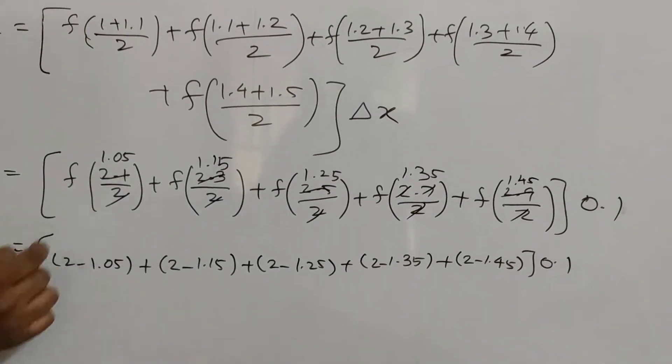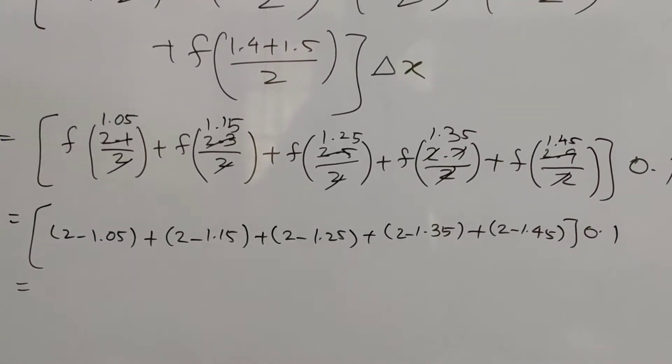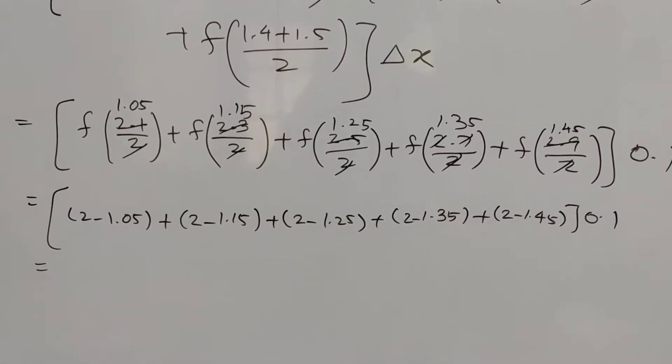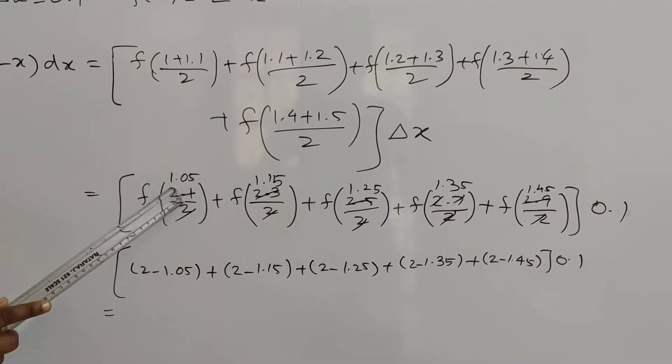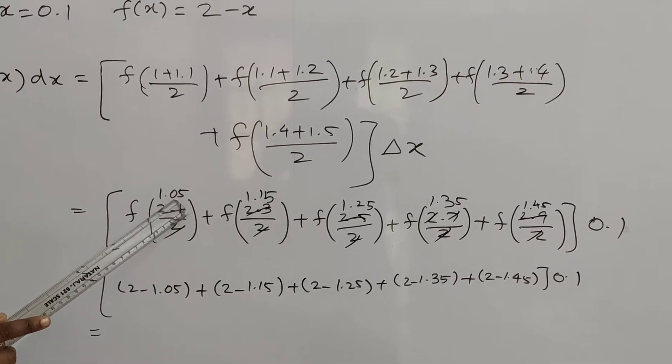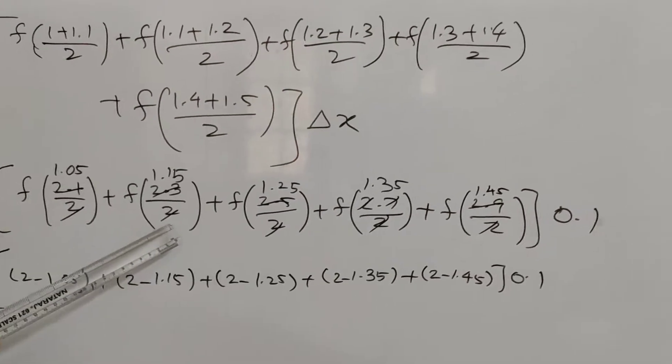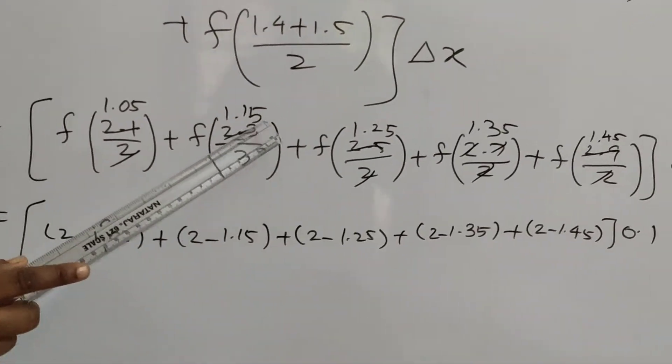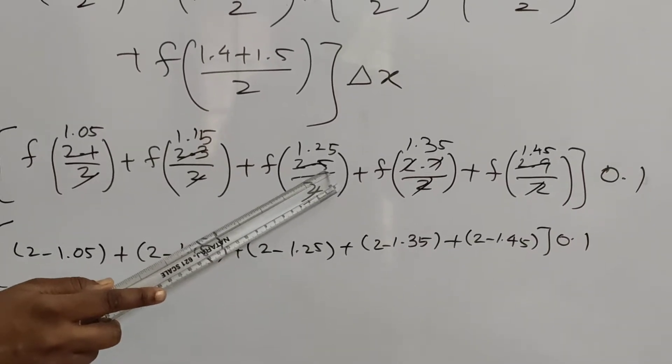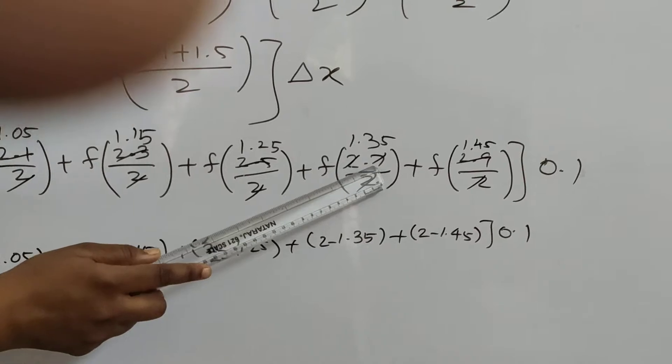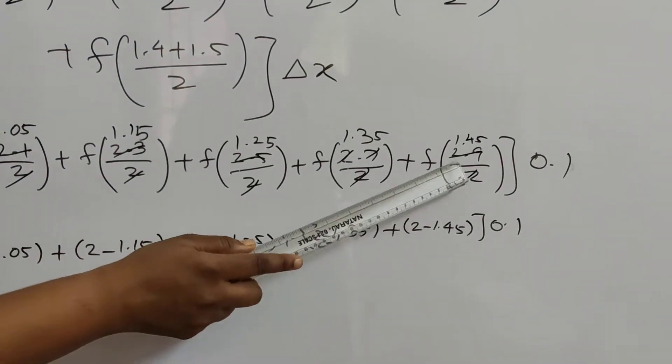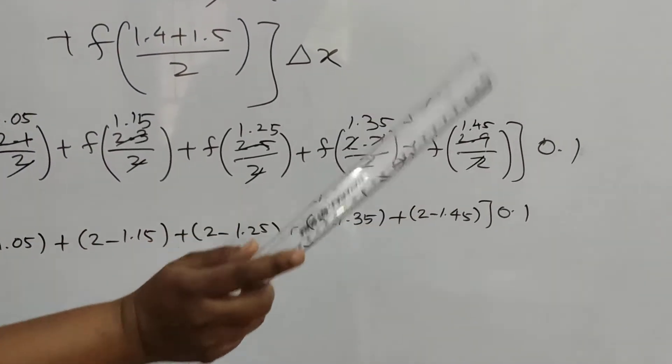So 1 plus 1.1 is 2.1 by 2, which is 1.05. Then 1.1 plus 1.2 is 2.3 by 2, which is 1.15. Then 1.2 plus 1.3 is 2.5 by 2, which is 1.25. Then 1.3 plus 1.4 is 2.7 by 2, which is 1.35. Then 1.4 plus 1.5 is 2.9 by 2, which is 1.45.